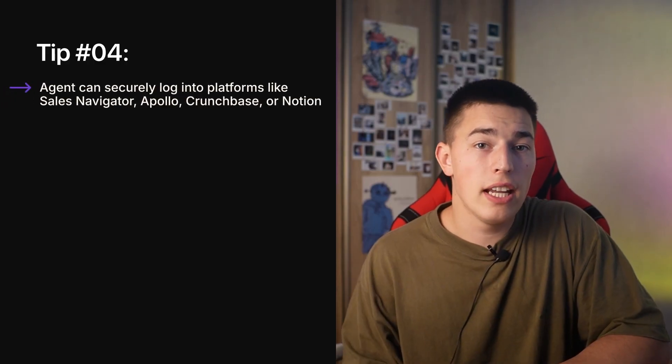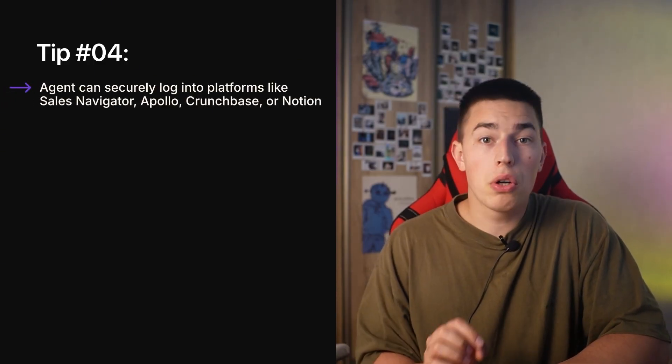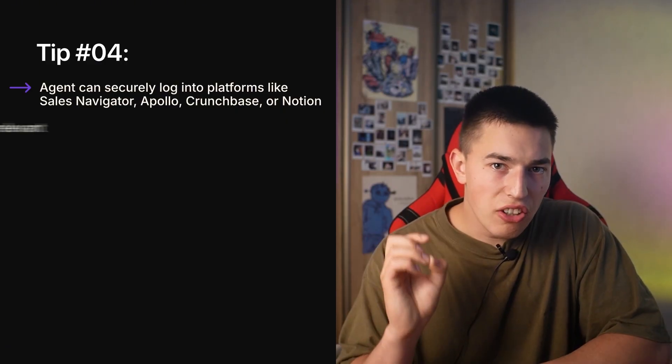Here's a big one for us nerds: Agent can now log into private data sources. If you connect your Sales Navigator, Apollo, Crunchbase, or even a Google Doc with a lead list, Agent can read it and act on it. One of the most highly requested features for deep research was the ability to log into websites and access authenticated sources — that's something Agent can now do. You could have it log into Apollo, extract companies with specific filters, and enrich them live. No manual work, no browser extensions — just API calls.